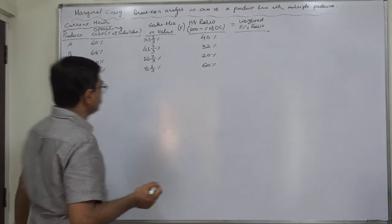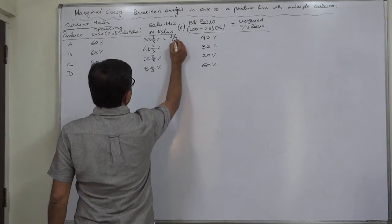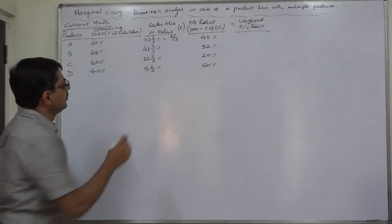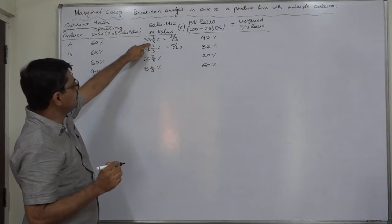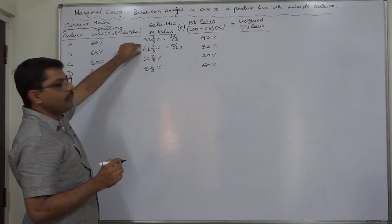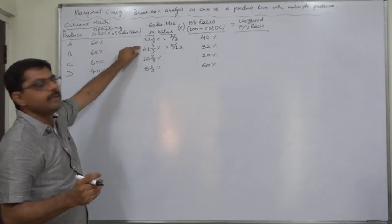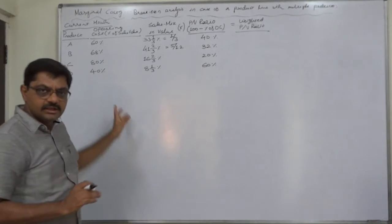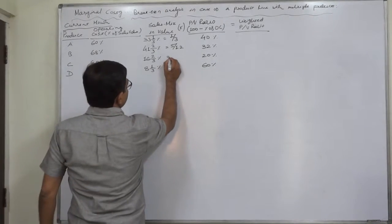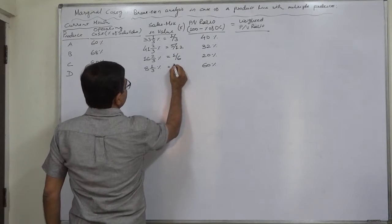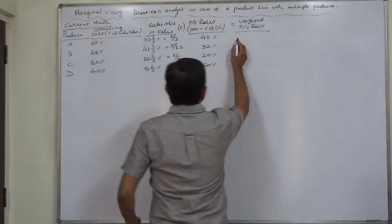Now we should multiply these two to get the weighted PV ratio, but before that we can smoothen this percentage. 33 and 1/3% means 1/3. 41 and 2/3% means 5 by 12. Let us discuss this point: 41 into 3 is 123 plus 2 is 125, 125 upon 3% that means 5 by 12. In this way you can simplify all these percentages in terms of fraction. 16 and 2/3 is 1/6 and 8 and 1/3 is 1/12.